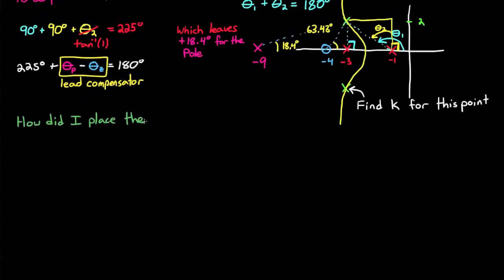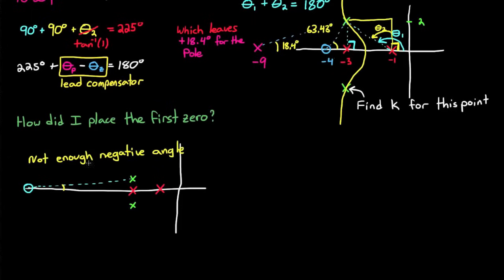Alright, let's get back to that question. How in the world did I place that first zero where I did? Well, unfortunately, there isn't a hard, fast rule for placing the first zero. It is possible to place the zero too far to the left. And that's because you need to generate at least enough negative angle to bring the sum back down to 180 degrees. Also, you can move the zero too far to the right.